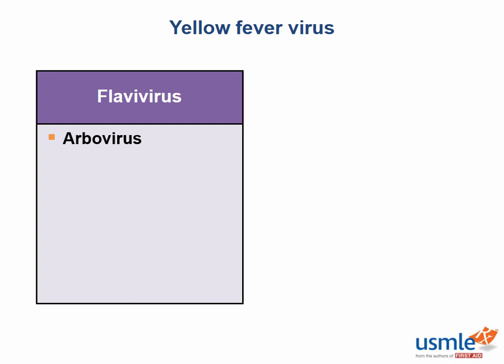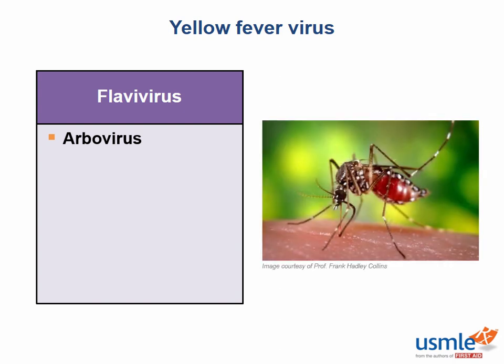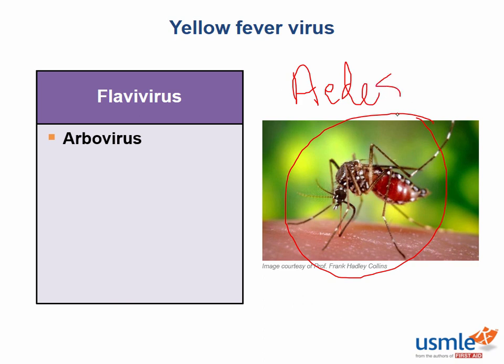For the yellow fever virus, the mosquito that is the arthropod vector is the Aedes mosquito. This mosquito transmits the virus and causes a clinical syndrome characterized by jaundice, fever, and black vomit.